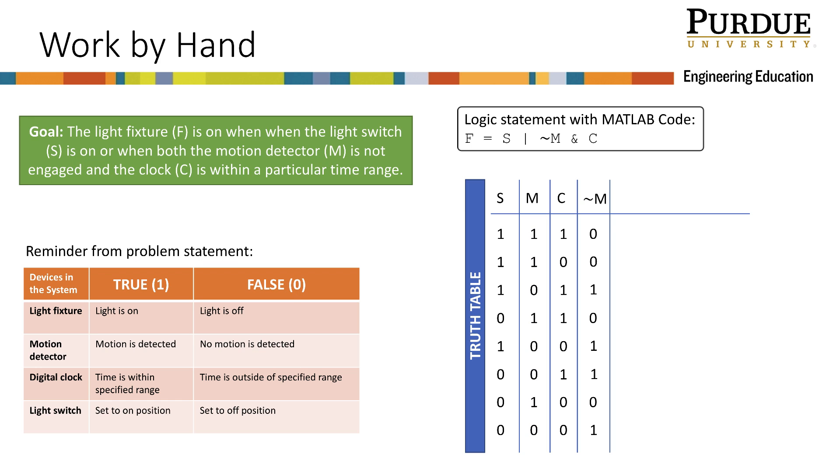Next, it evaluates the logical AND statement, so we will consider the NOT M and C part of the statement. Looking at the two columns C and NOT M, we can see that there are only two times when both are true. So I put ones in my new column to go with these two true statements and fill in the rest of the column with zeros for false.